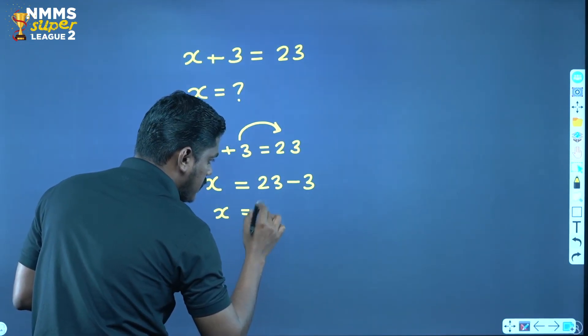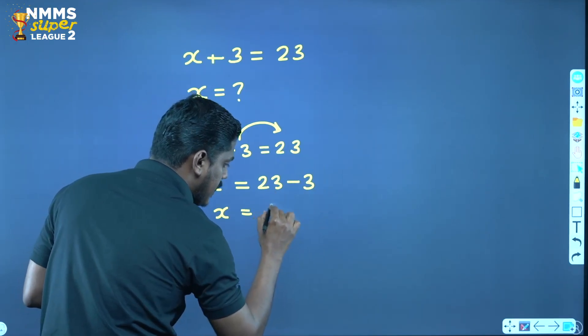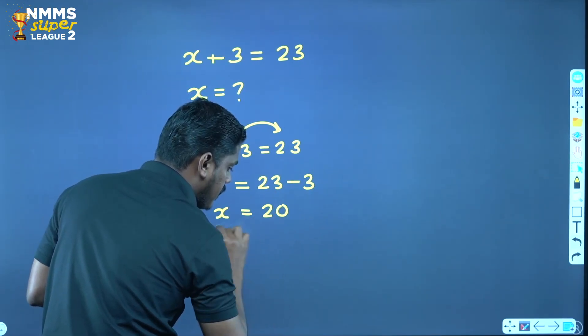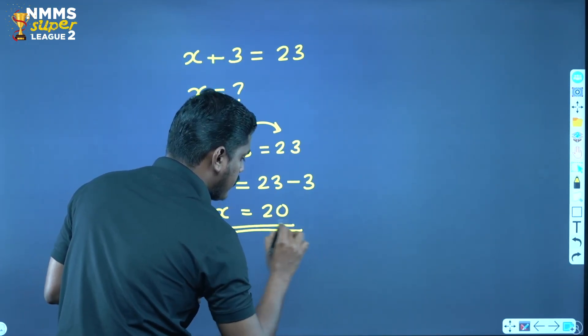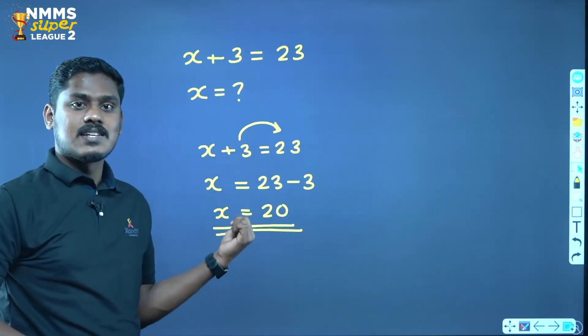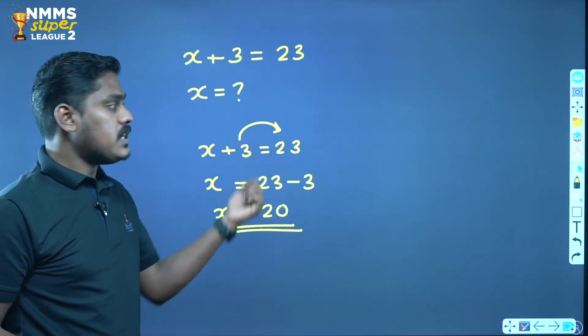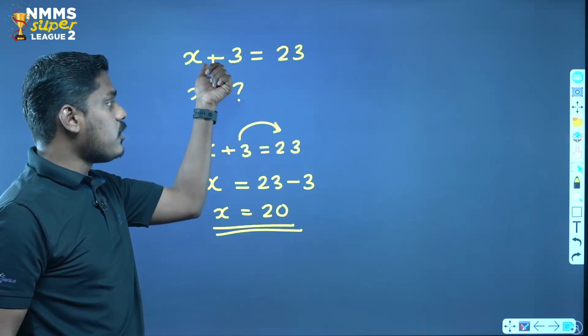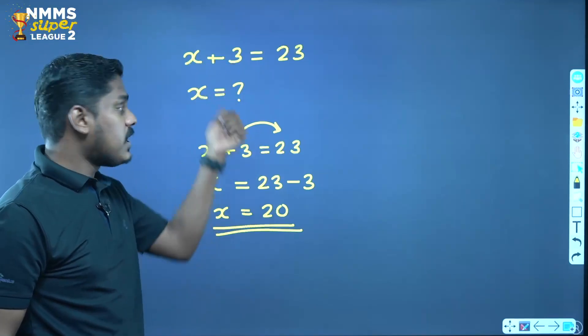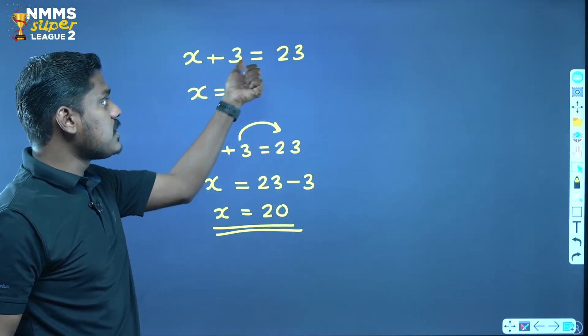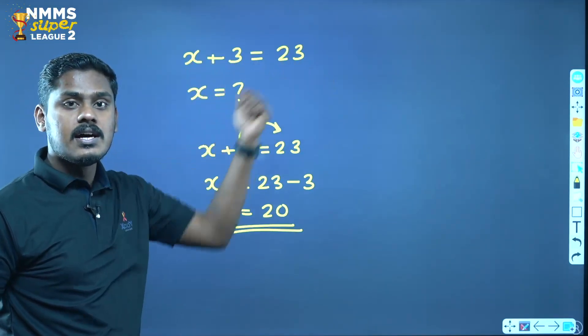So x is equal to 23 minus 3. The answer is equal to 20. If x is equal to 20, then 20 plus 3 is equal to 23, which confirms our answer.